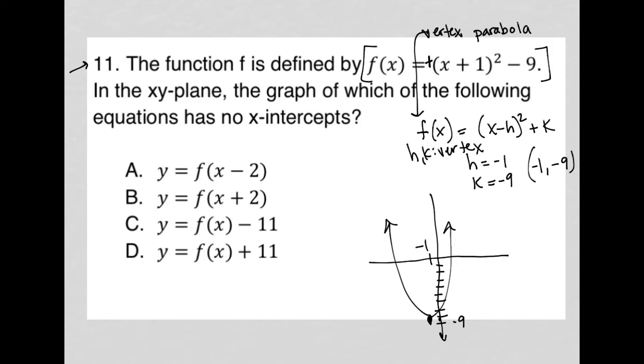And after the vertex, there isn't any quality control on how the parabola looks, but I know that it goes up from there. So what does the rest of this question say? In the xy plane, the graph of which of the following equations has no x-intercepts?